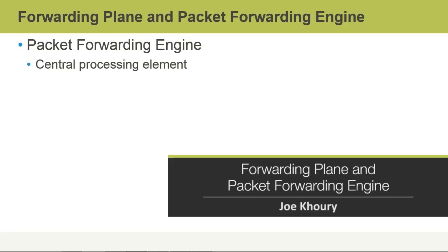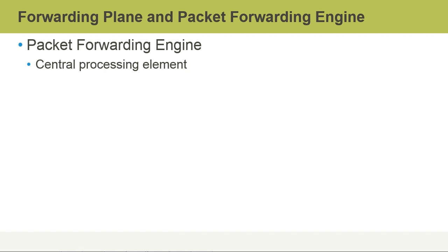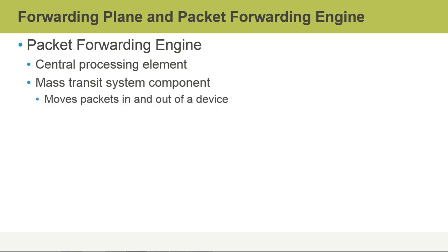The data plane or forwarding plane runs on the packet forwarding engine. Some people refer to the forwarding plane as the packet forwarding engine. It can be considered the central processing element that moves packets in and out of the device using ASIC or FPGA specific hardware. You can think of it as the Metro Transit System component of a Juniper device. When a packet arrives on the router, the packet forwarding engine serves to move those packets back out quickly, so it can move on to the next packet — simplifying its job and making it more efficient.